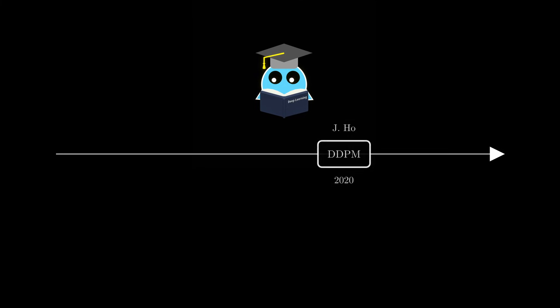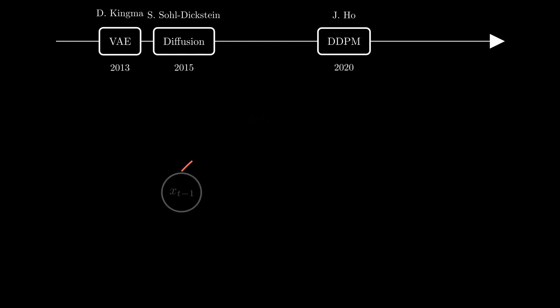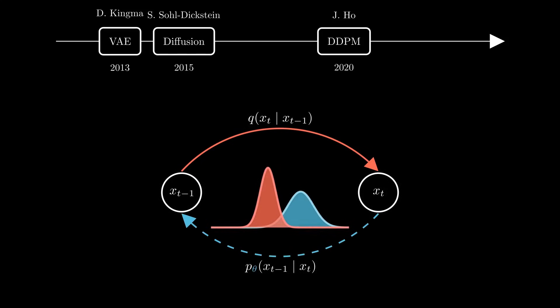The first one, the one we covered last time, was popularized by Jonathan Ho in 2020 based on a previous work published in 2015. It is mostly based on variational inference, so the general derivations and framework are close to variational autoencoders. We defined a forward noising process using a Markov chain and learned to reverse it by training a neural network with the evidence lower bound.